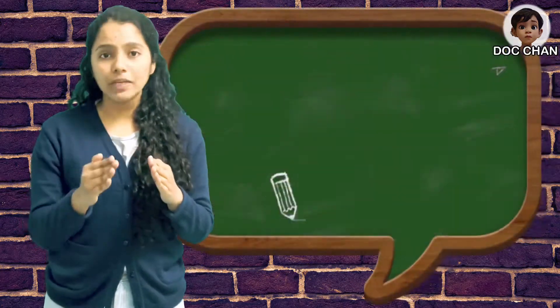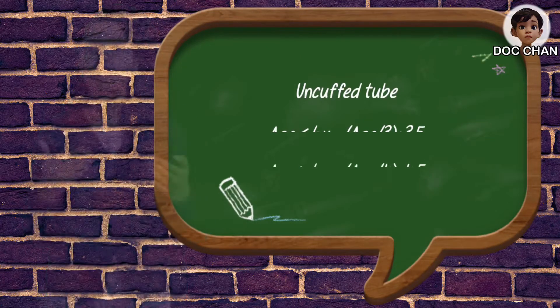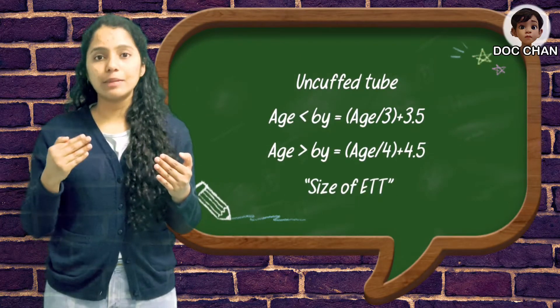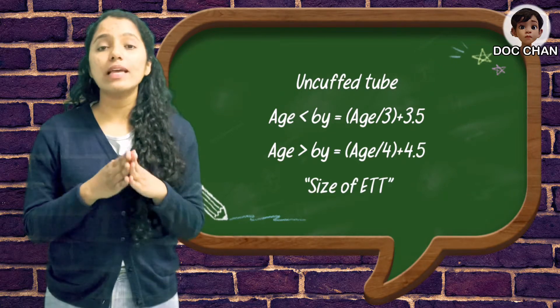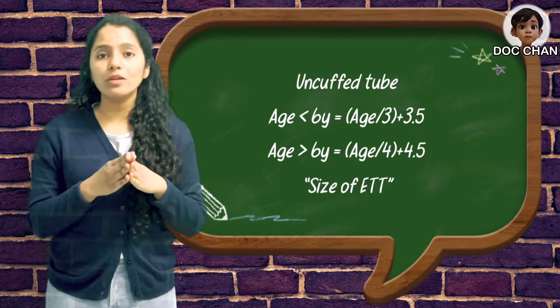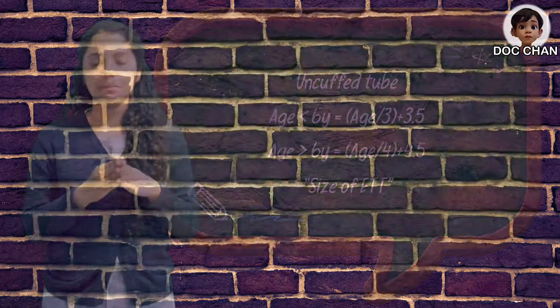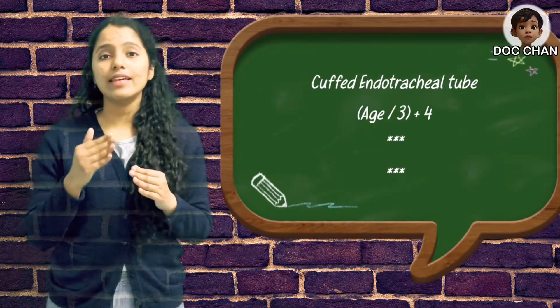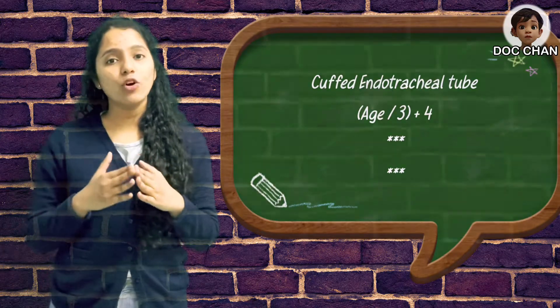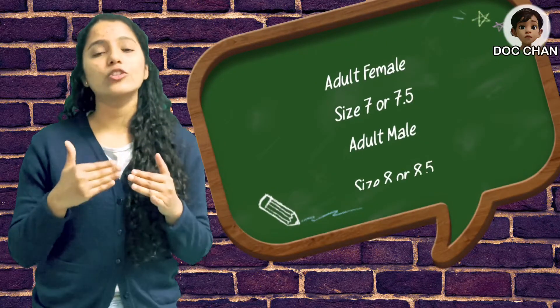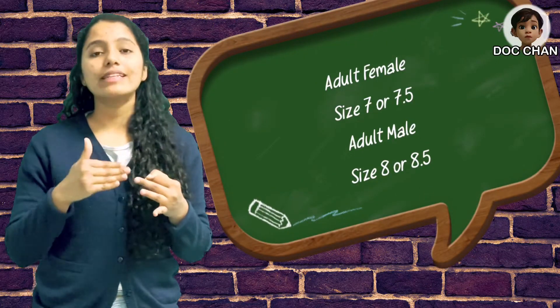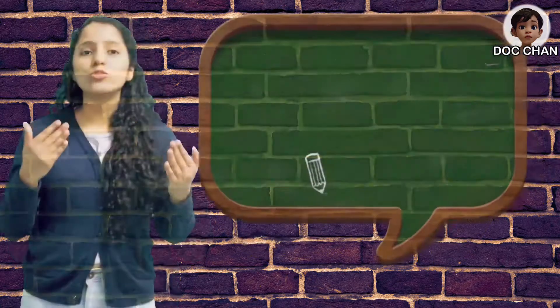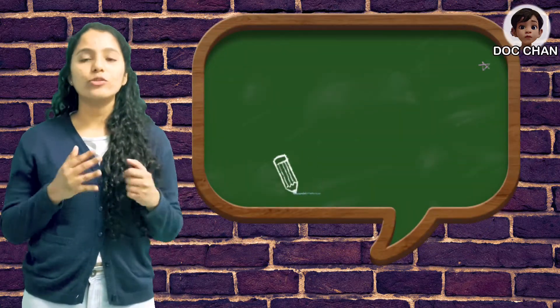For uncuffed tubes, based on age: if the patient is less than 6 years of age, the formula is age/3 + 3.5 mm. If the patient is above 6 years of age, the formula is age/4 + 4.5 mm. For a cuffed tube, the formula is age/3 + 4, also called Kain's formula. In adult females, the most commonly used size is 7 to 7.5 mm, and in adult males it's 8 to 8.5 mm.